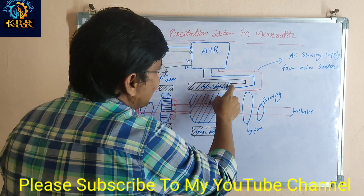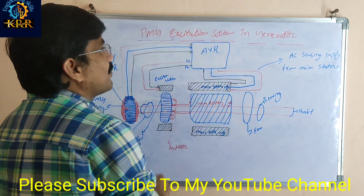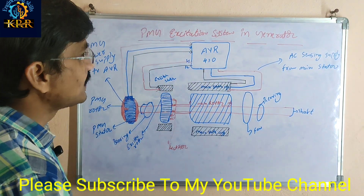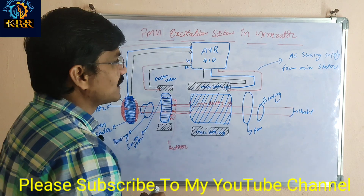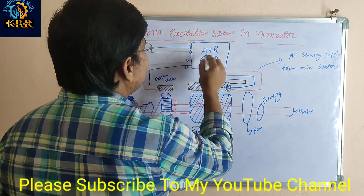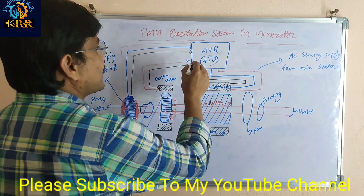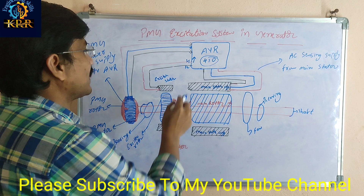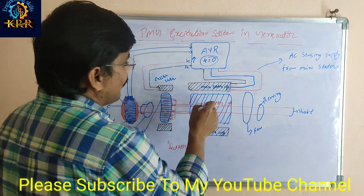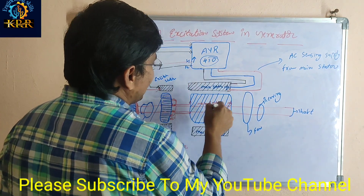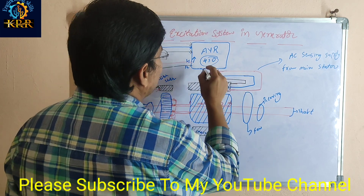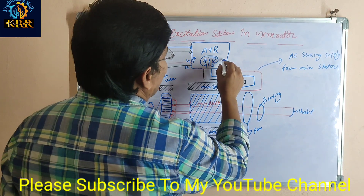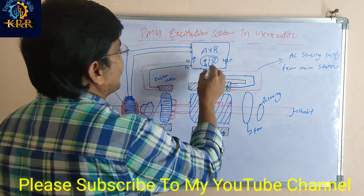The power goes to the load and sensing is also taken from here. If 410 volts is coming, the AVR senses this and applies over-excitation accordingly. With over-excitation, more flux is generated, and the voltage increases — for example, rising to 415 volts.